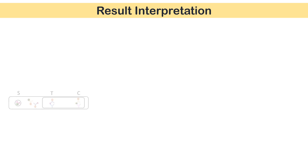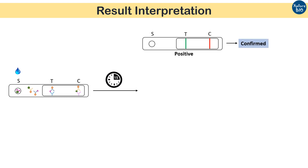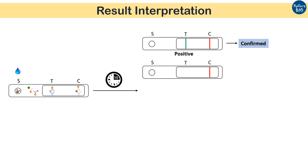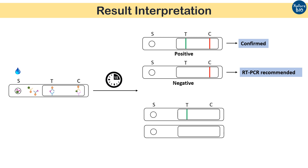Moving on to interpretation of results: from sample loading to result interpretation, it takes around 15 minutes. If both the test line and control line appear, the test is successful and the patient is positive for novel coronavirus. If only the control line appears, the run is successful and the patient is negative — but this needs to be further verified by RT-PCR, as very low viral load is not detected by antigen kits. If only the test line or no line appears, the run is faulty, the results are invalid, and the test needs to be repeated.